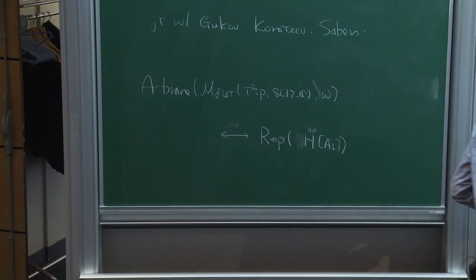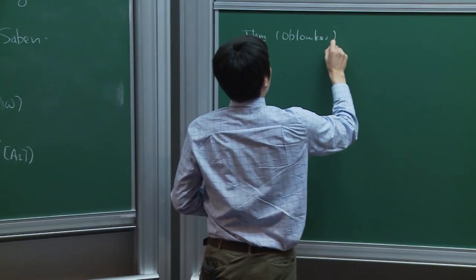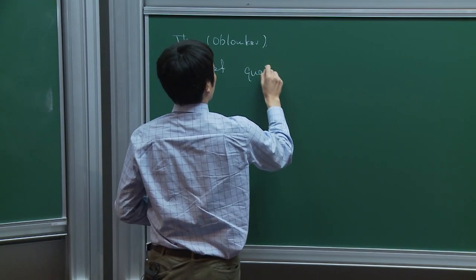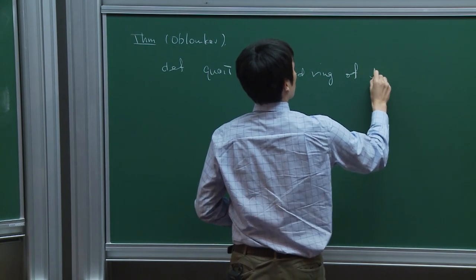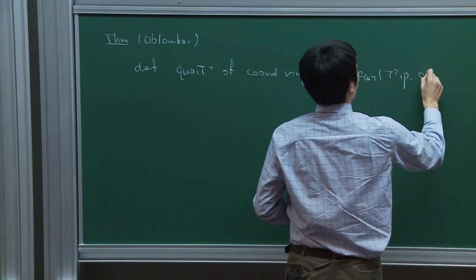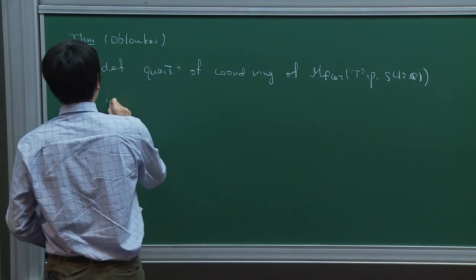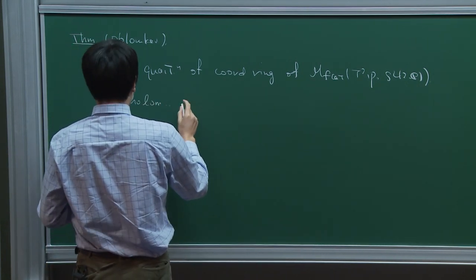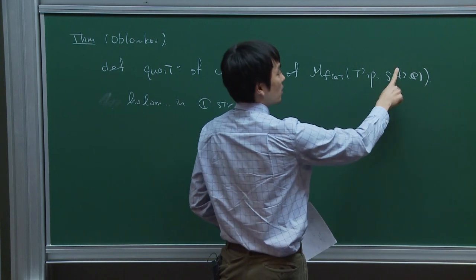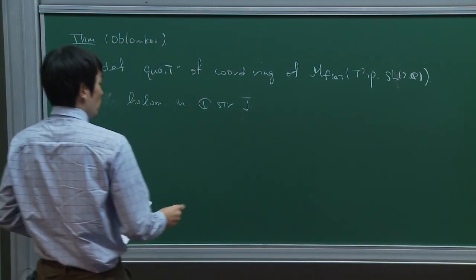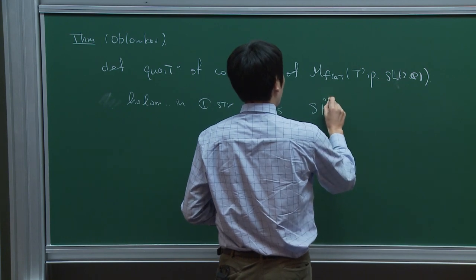To tell you the story, let me begin with a theorem by Oblonkov. It tells that the deformation quantization of the coordinate ring of the moduli space of flat connections — the character variety — of the one-punctured torus of SL2C in complex structure J, coming from the SL2C group, is isomorphic to the spherical DAHA, which I call SHW dot.